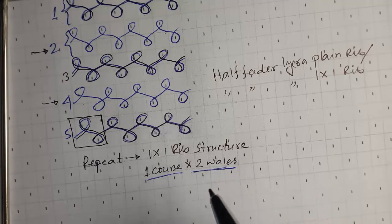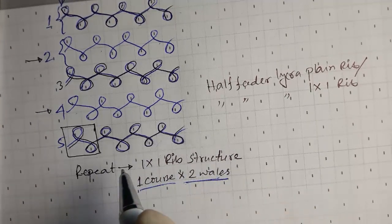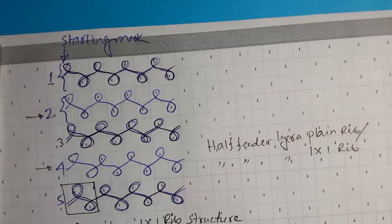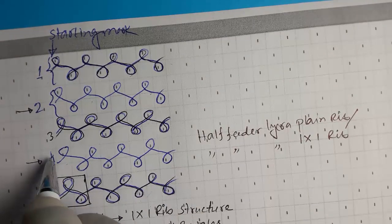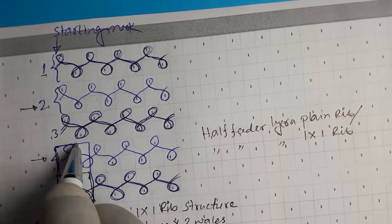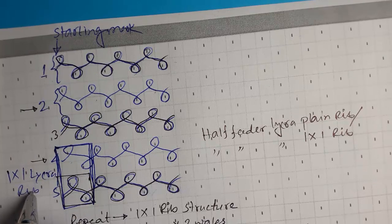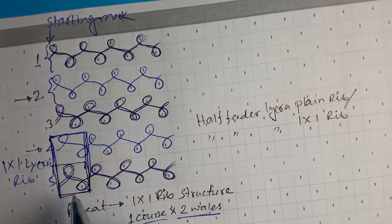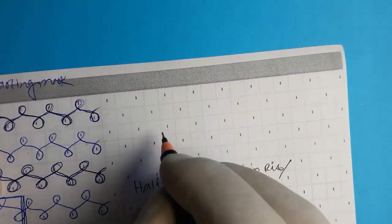But in the case of half-feeder lycra rib, we can point out the repeating unit — this will be the repeating unit for one by one lycra rib — because the fabric contains lycra in alternate feeders. If there are 32 feeders in the machine,